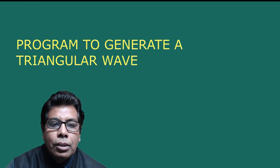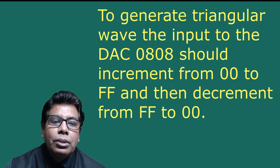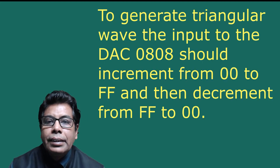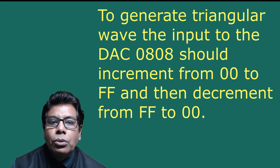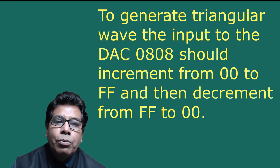Let us go to the program to generate triangular wave. To generate a triangular wave, the input to DAC 0808 should increment from 00H to FFH and then decrement from FFH to 00H. For this program we will use two loops — one for up and one for down.